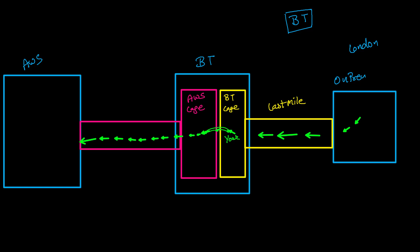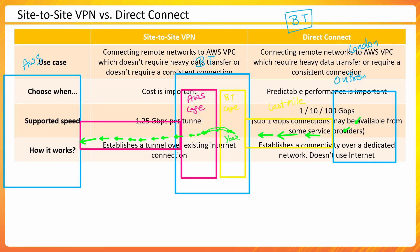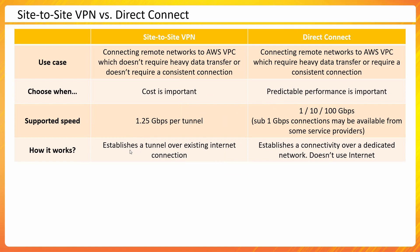In the case of site-to-site VPN, you just need to set up a VPN connection and you do not need any service provider because you already have internet at your location. That makes it much easier and faster to set up, whereas Direct Connect requires you to talk to a service provider and get things ready.